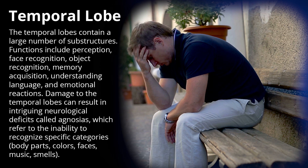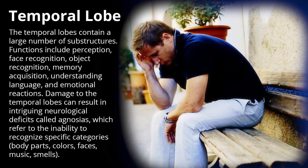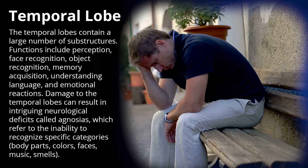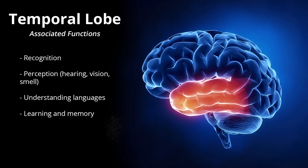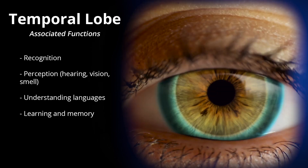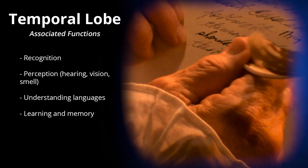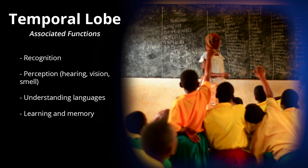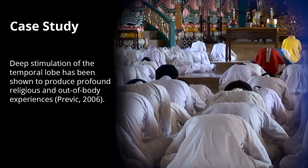Agnosia can affect recognition of body parts, colors, faces, music, and smells. Functions associated with the temporal lobe include recognition, perception, hearing, vision, smell, understanding languages, and learning and memory.